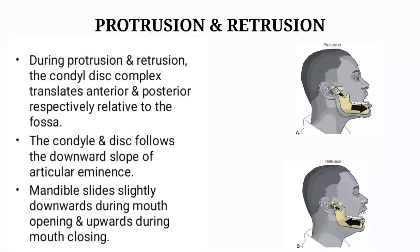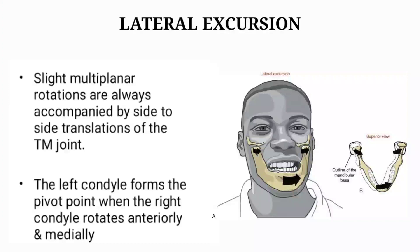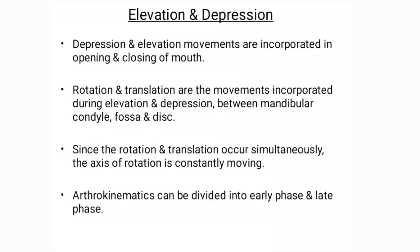During protrusion and retrusion, the condyle-disc complex translates anteriorly and posteriorly respectively, relative to the fossa. The condyle and disc follow the downward slope of the articular eminence. The mandible slides slightly downwards during mouth opening and upwards during mouth closing. During lateral excursion, slight multiplanar rotations are always accompanied by a side-to-side translation of the TMJ. The left condyle forms the pivot point when the right condyle rotates anteriorly and medially.